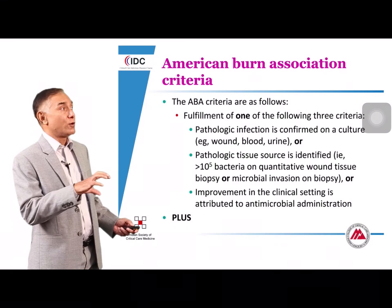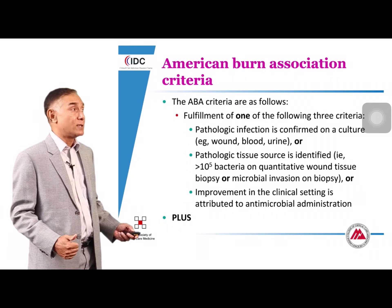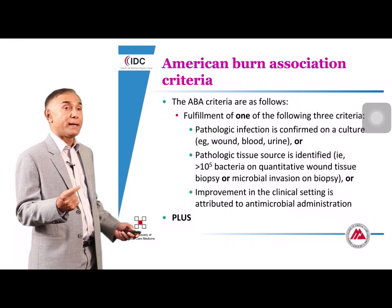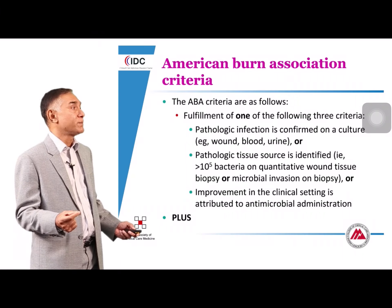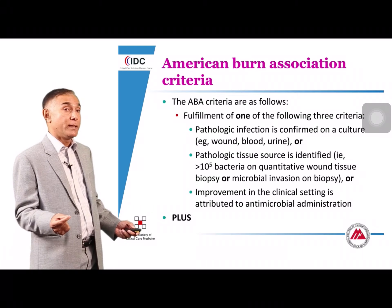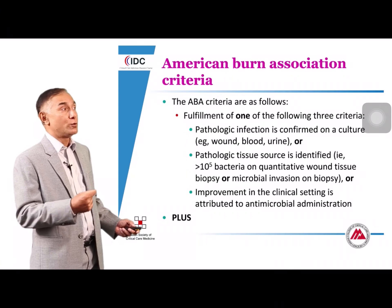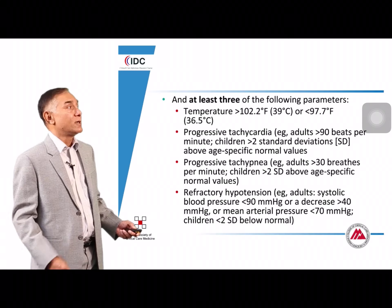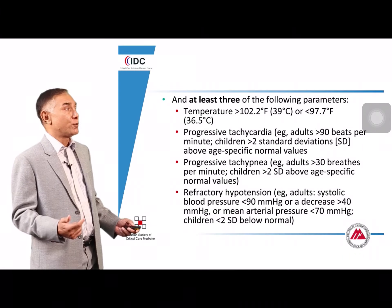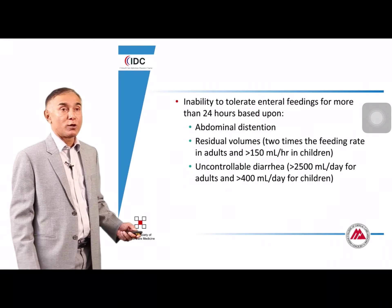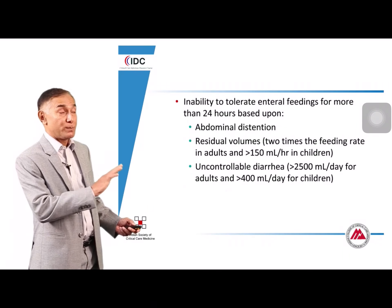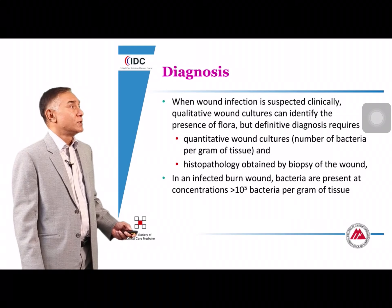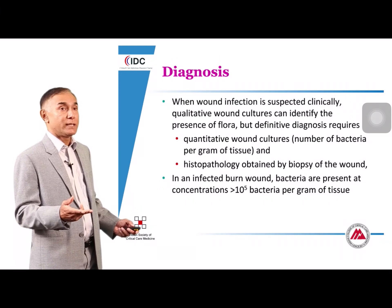The major diagnostic criteria include: a pathologic infection confirmed by positive blood culture, a burn tissue biopsy showing more than 10^5 bacteria per gram of tissue (the gold local standard), or clinical improvement after giving antibiotics. In addition, typical SIRS criteria — fever, tachycardia, tachypnea, hypotension, leukocytosis, hyperglycemia, and inability to tolerate tube feeds — when present in the burn setting should make you think of burn wound sepsis.